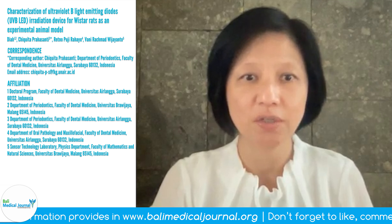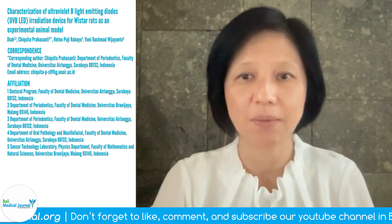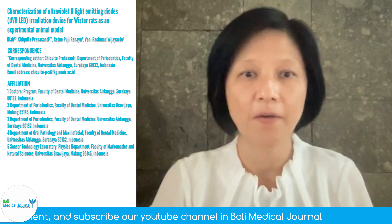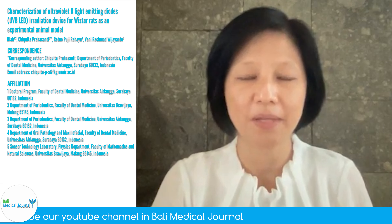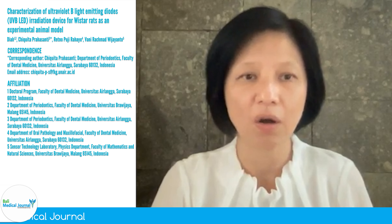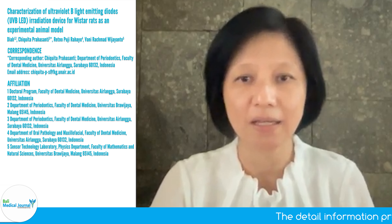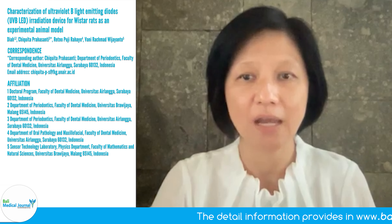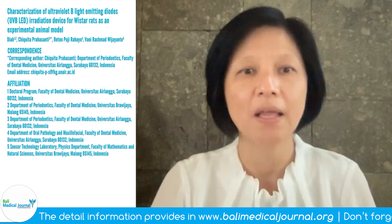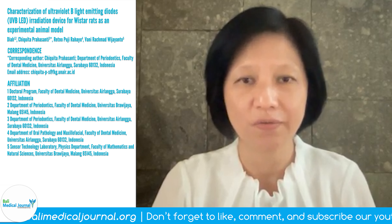The characterization carried out included temperature stability and irradiation stability, with observation every 30 minutes for 10 hours and no replication. Statistical analysis used the Kolmogorov-Smirnov Asymptotic Approximation Testing Technique. The test criteria state that if the probability value is more than the level of significance with alpha 0.05, the distribution is considered normal.